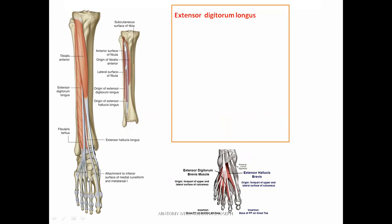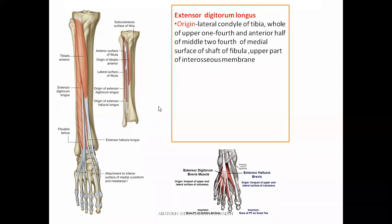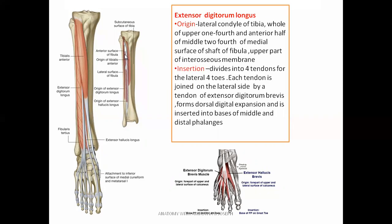Extensor digitorum longus originates from the lateral condyle of the tibia, as seen here, and from almost all areas of the shaft of fibula — specifically the upper one-fourth and anterior half of the middle two-fourths of the medial surface of the shaft of fibula — as well as the upper part of the interosseous membrane. As it descends, it divides into four tendons for the lateral four toes.